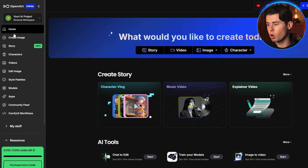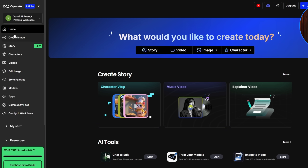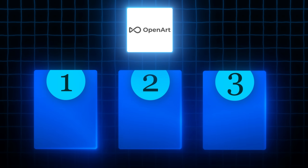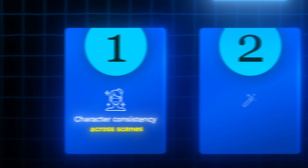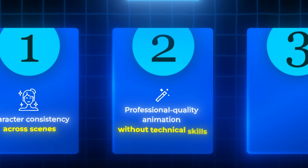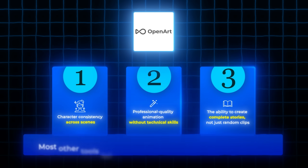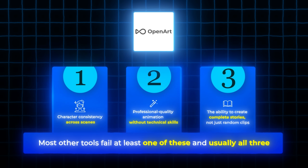Head over to OpenArt — I've left a link in the description below. The reason I'm using OpenArt specifically is because it solves the three biggest problems that kill most animated content: character consistency across scenes, professional quality animation without technical skills, and the ability to create complete stories, not just random clips. Most other tools fail at least one of these, and usually all three.